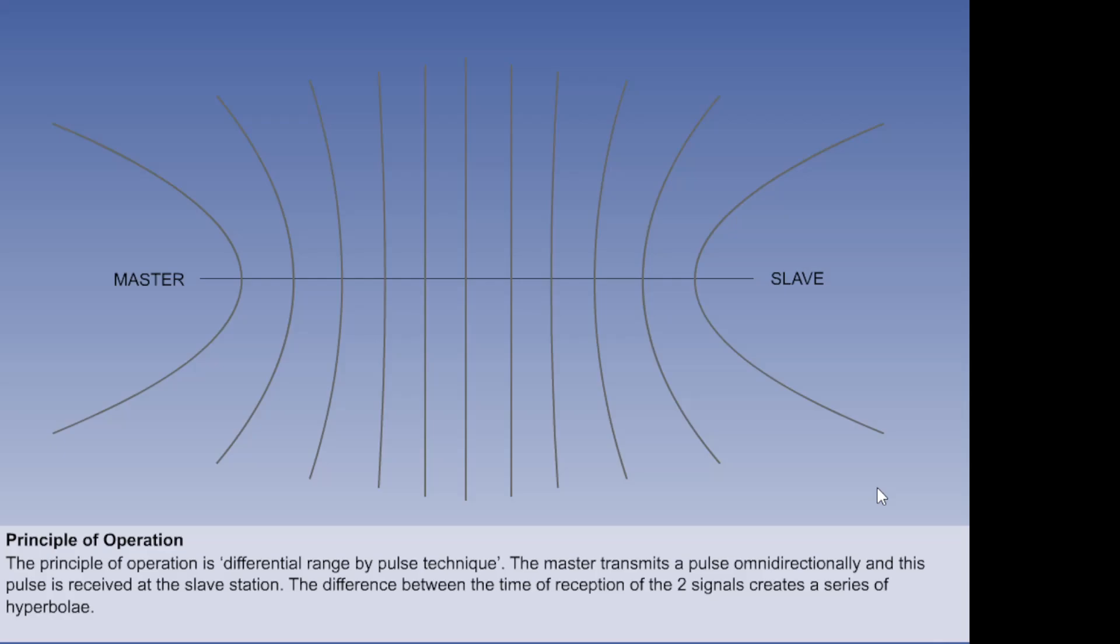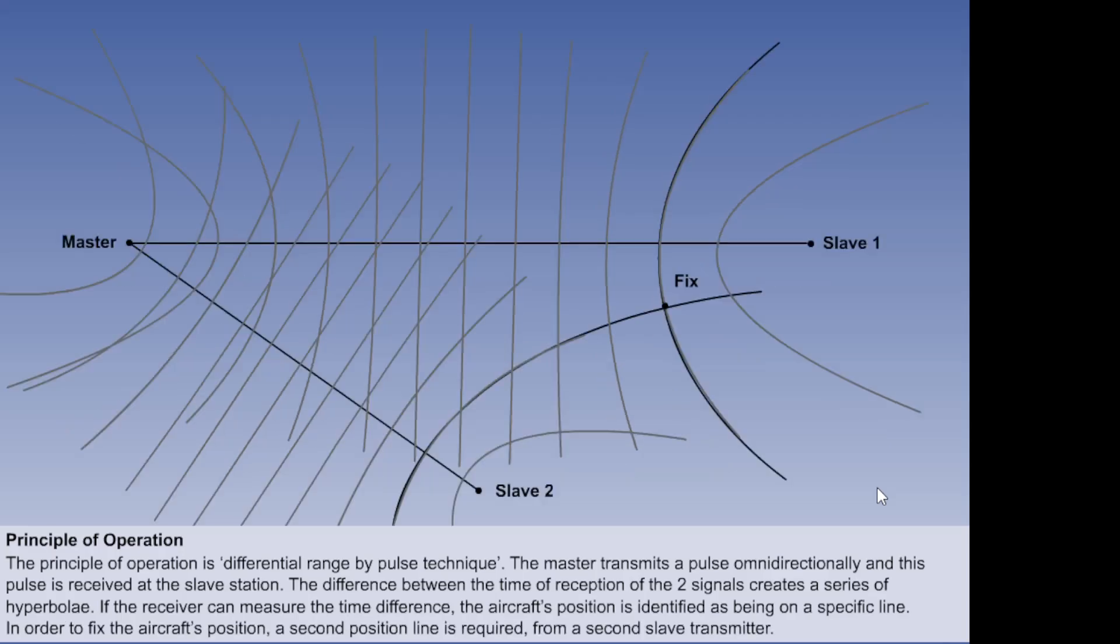The difference between the time of reception of the two signals creates a series of hyperbolas. If the receiver can measure the time difference, the aircraft's position is identified as being on a specific line. Clearly, in order to fix the aircraft's position, a second position line is required from a second slave transmitter.